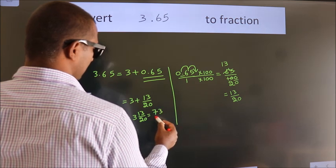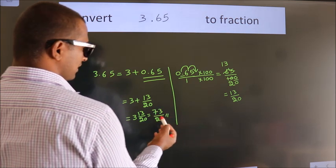In mixed form, 73 by 20 is our fraction.